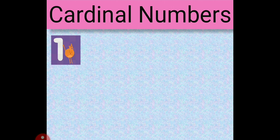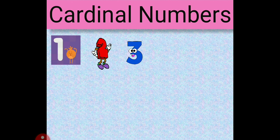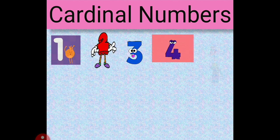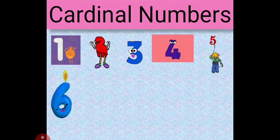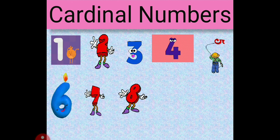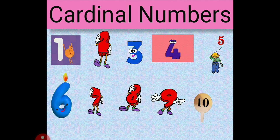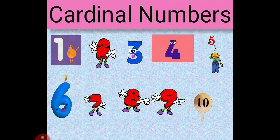Now let's see the difference between cardinal and ordinal numbers. First, we are going to see cardinal numbers. Which number can you see on the screen? 1. Along with me you have to speak. 2, 3, 4, 5, 6, 7, 8, 9, 10. So here are the simple cardinal numbers 1 to 10 on the screen.